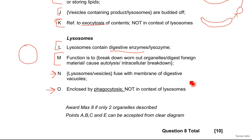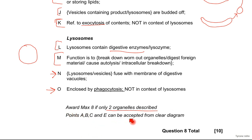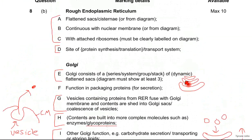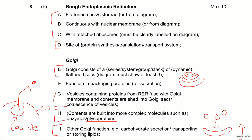So that's the structure and functions of those three organelles — pretty basic really. You could only have got eight marks if there were only two organelles described, you couldn't have got any more. As mentioned, points A, B, C, and D can be accepted from a clear diagram. That's the feedback for this cell structure essay.